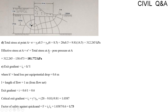Effective stress equals total stress minus pore pressure already determined, which gives the effective vertical stress at point A. The exit gradient is equal to head loss per equipotential drop divided by length of flow. The head loss per equipotential drop is 0.6 meters and the length of flow from the flow net is 1 meter, so the exit gradient equals 0.6 divided by 1, which is 0.6.